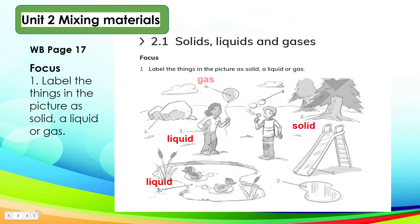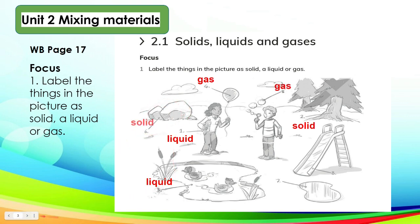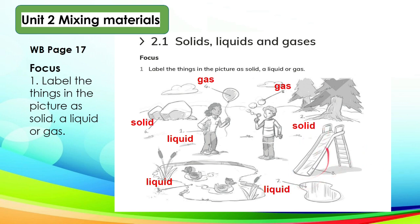Number 5, a bubble is an example of gas. And these rocks are solid. Number 7, this is a puddle — a small pool of liquid, especially of rainwater on the ground — so this is liquid. Number 8, a slide is usually made of metal, plastic, or fiberglass. A slide is also an example of solid.